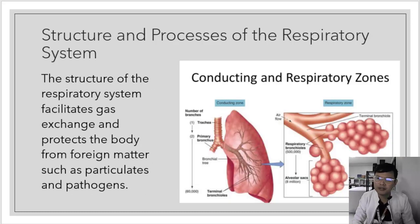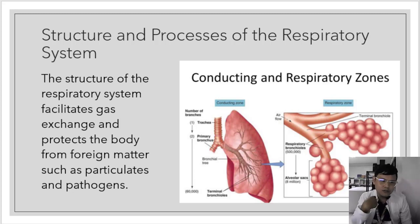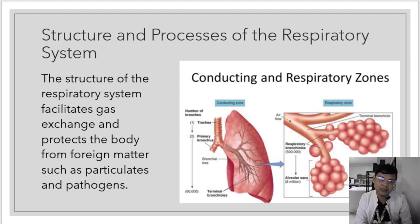Let's talk about the structure and process of the respiratory system. The respiratory system facilitates gas exchange and protects the body from foreign matter such as particulates and pathogens. For example, when food accidentally enters the trachea instead of the esophagus, passing the epiglottis, the body coughs to expel those particulates and pathogens — that is a defense mechanism.